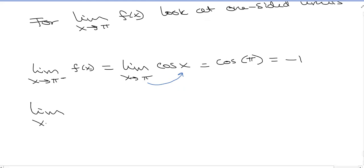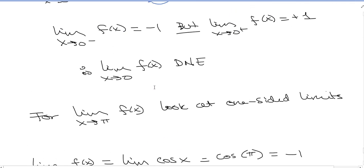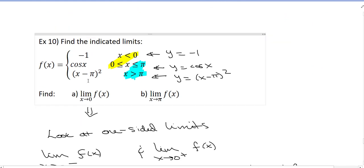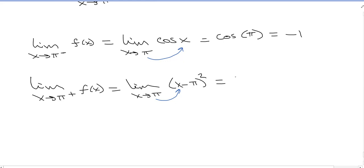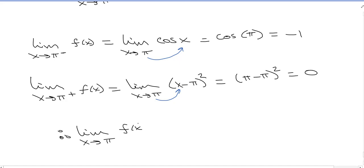Now the right-sided limit: the limit as x goes to pi from the right. If x is to the right of pi, then x is greater than pi, so I look at the bottom function — x minus pi, quantity squared. The limit as x goes to pi of (x minus pi)² — plugging in pi: pi minus pi squared equals 0. The left-sided limit is negative 1 and the right-sided limit is 0 — they're not the same. Therefore, the two-sided limit as x goes to pi does not exist.